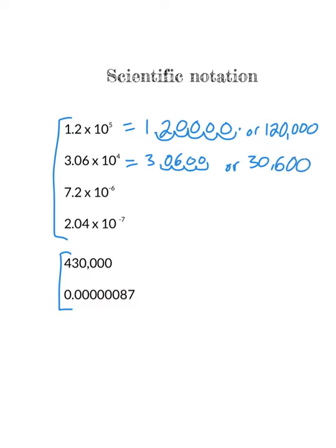Now I'm multiplying by a negative exponent, so I'm going to make the number smaller, which means moving the decimal to the left. Starting with 7.2, I give myself some space for placeholders and move the decimal 6 places to the left: 1, 2, 3, 4, 5, 6. That gives me 5 zeros, so the result is 0.0000072.